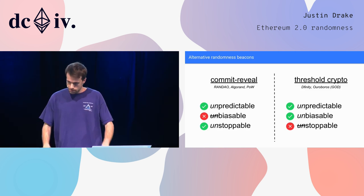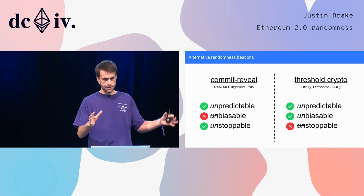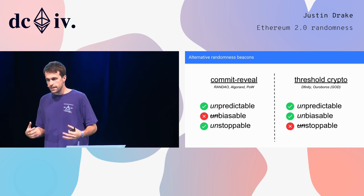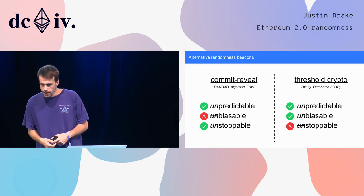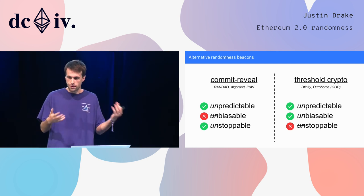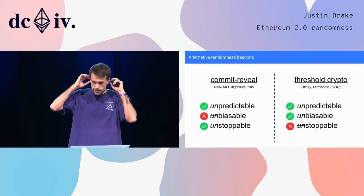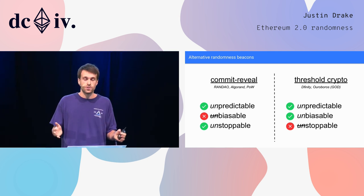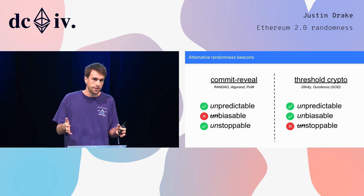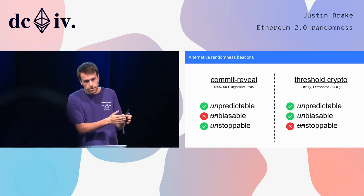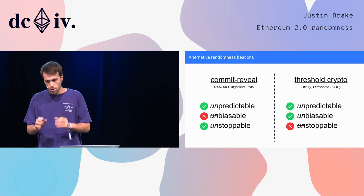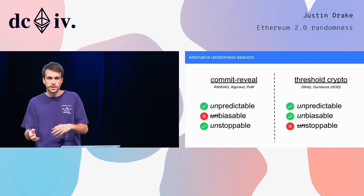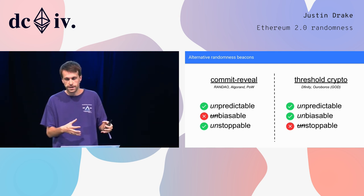There are basically two classical families of randomness beacons. There are beacons based on commit-reveal — for example, RANDAO — and these randomness beacons have an attack called the last revealer attack. You have an ordered list of participants, and when you're about to use the randomness, the last participant can either reveal or not reveal, and therefore bias the randomness.